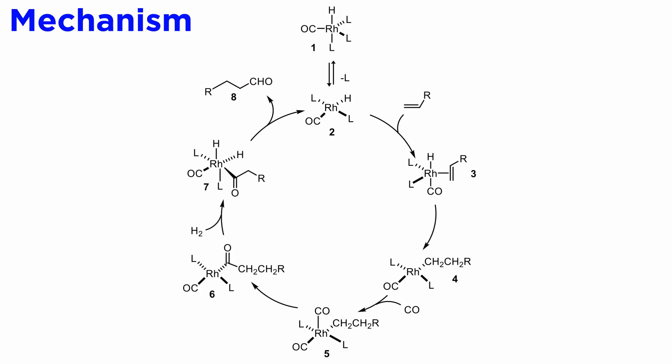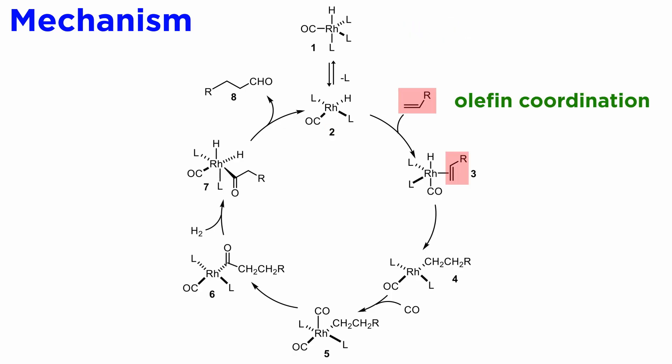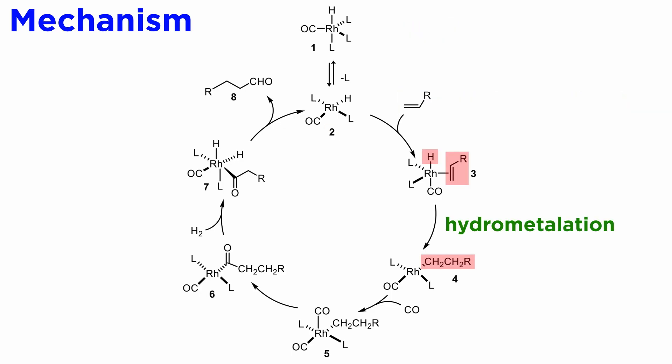The mechanism has been studied in detail and is generally similar for both cobalt and rhodium catalysts. Species 1 usually has to lose a ligand in order to enter the catalytic cycle in the form of 2. From there, the olefin coordinates to the metal center to yield 3. Then it undergoes a hydrometallation to yield 4.